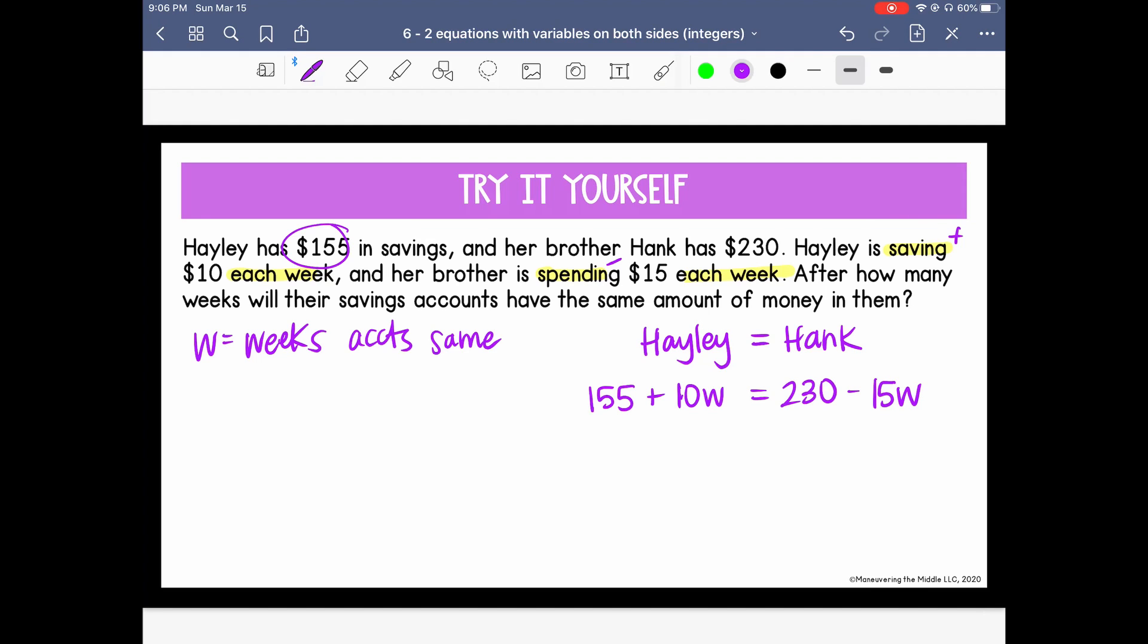I'll collect the variables on the left since 10W is larger than negative 15W. So let's start by canceling negative 15W and adding 15W to both sides. So we get 155 plus 25W equals 230.